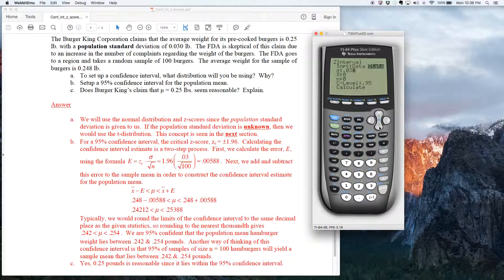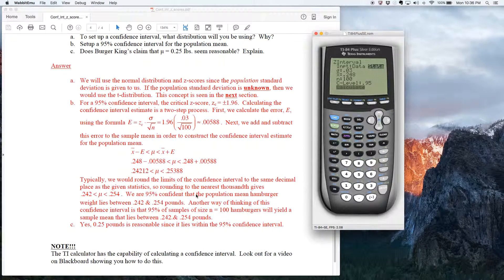So sigma was 0.03, that's the population standard deviation. The x bar was 0.248. The number of hamburgers was 100. And this question here says set up a 95% confidence interval. So notice C level is already set to 0.95. So I'm just going to go ahead and calculate. And what it's going to do is all this work right here for me, which is kind of remarkable when you think about it.